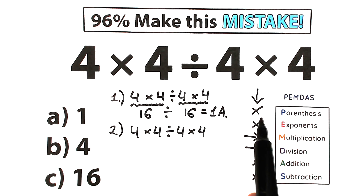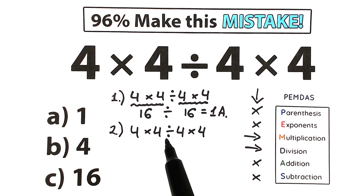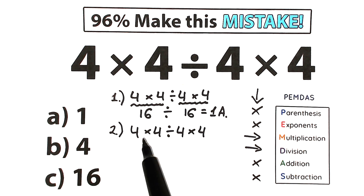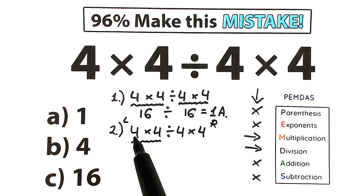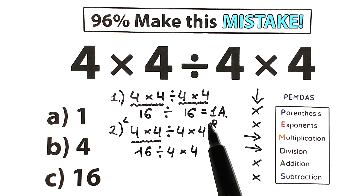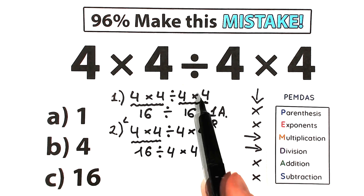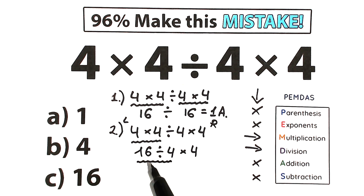What does PAMDAS tell us about the multiplication-division group? We scan for the first sign from left to right. We have multiplication, multiplication, then division. The first sign from left to right is this multiplication, so we start there: 4 times 4 gives us 16. Now we have 16 divided by 4 times 4. The next first sign from left to right is division, so we work with that — not the multiplication on the right.